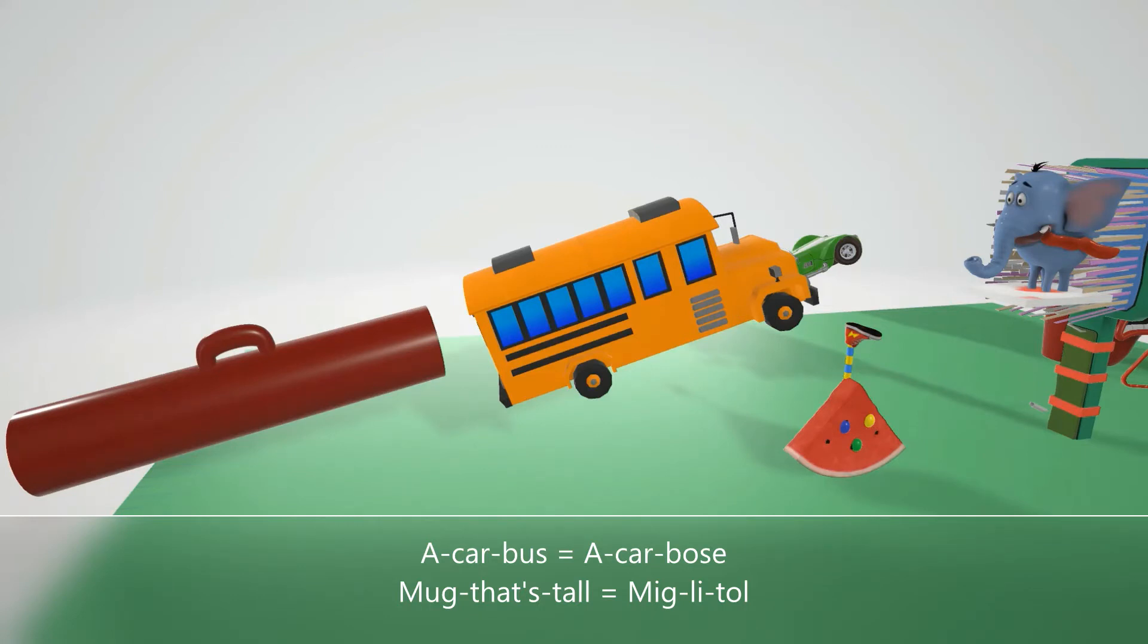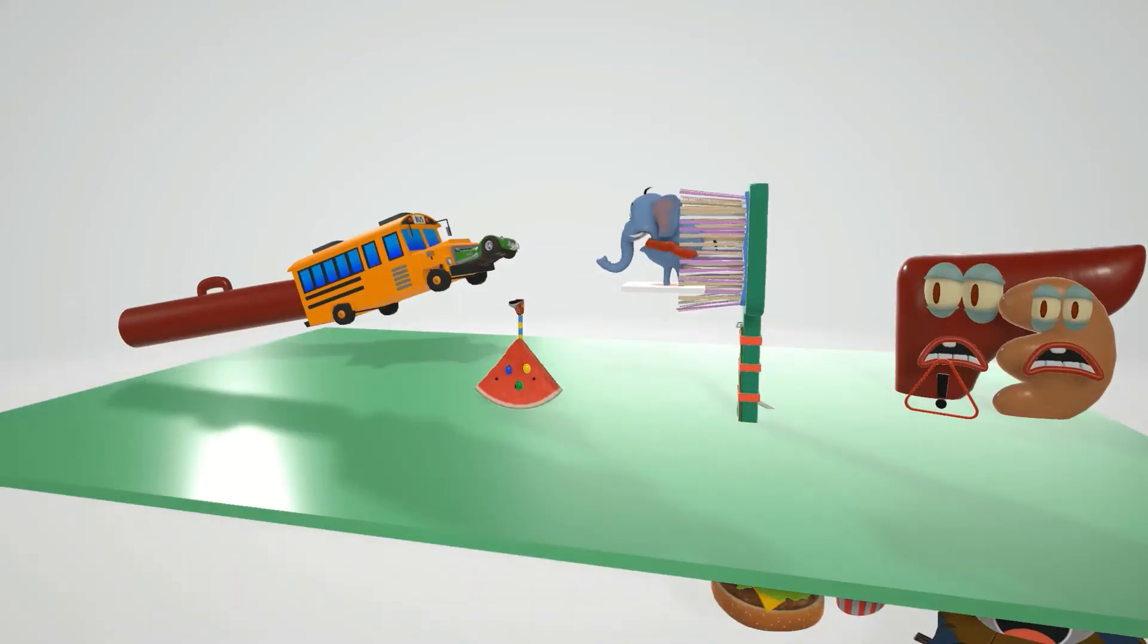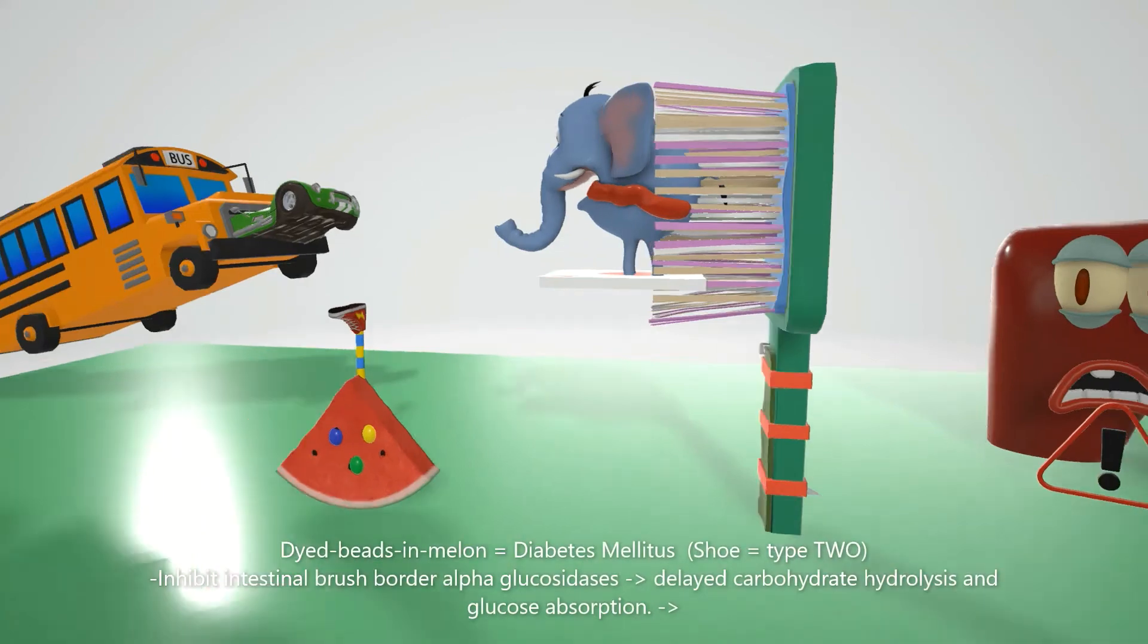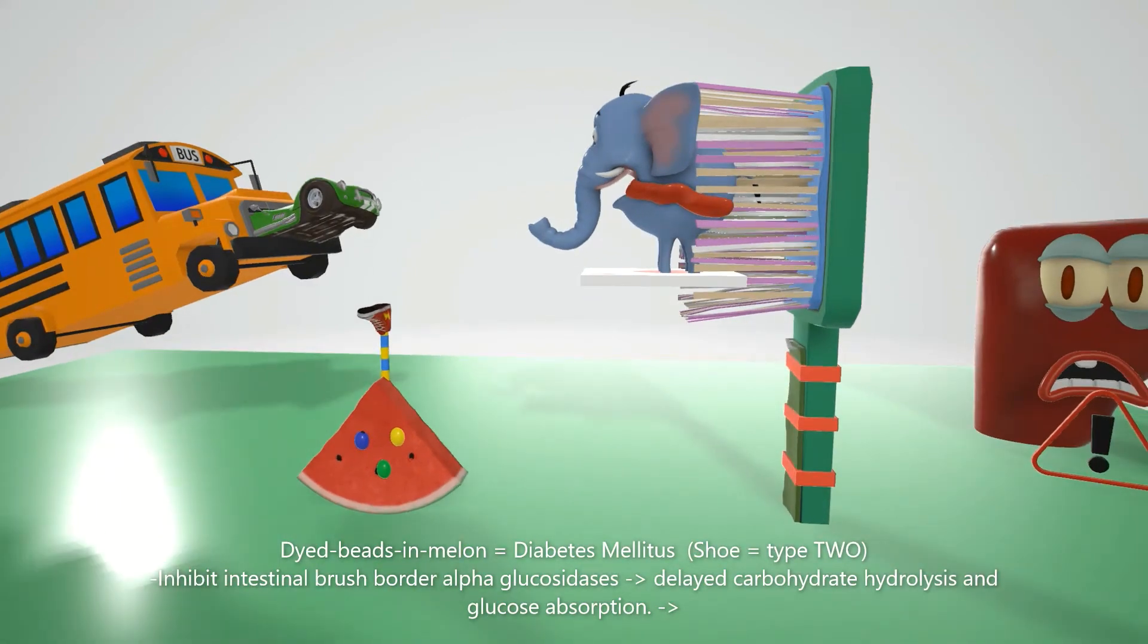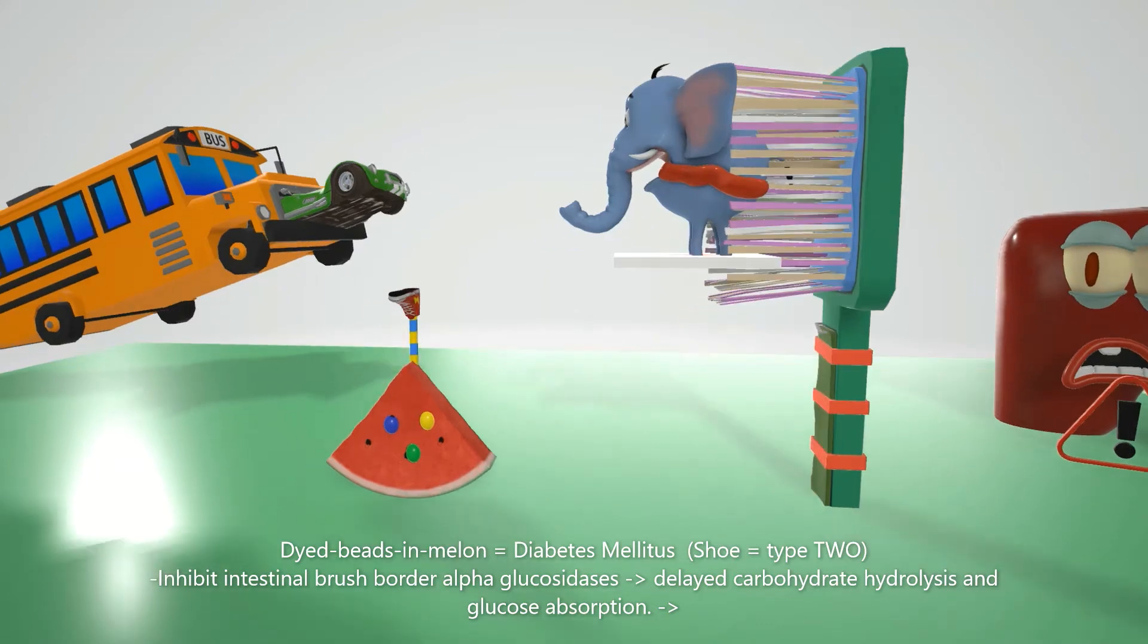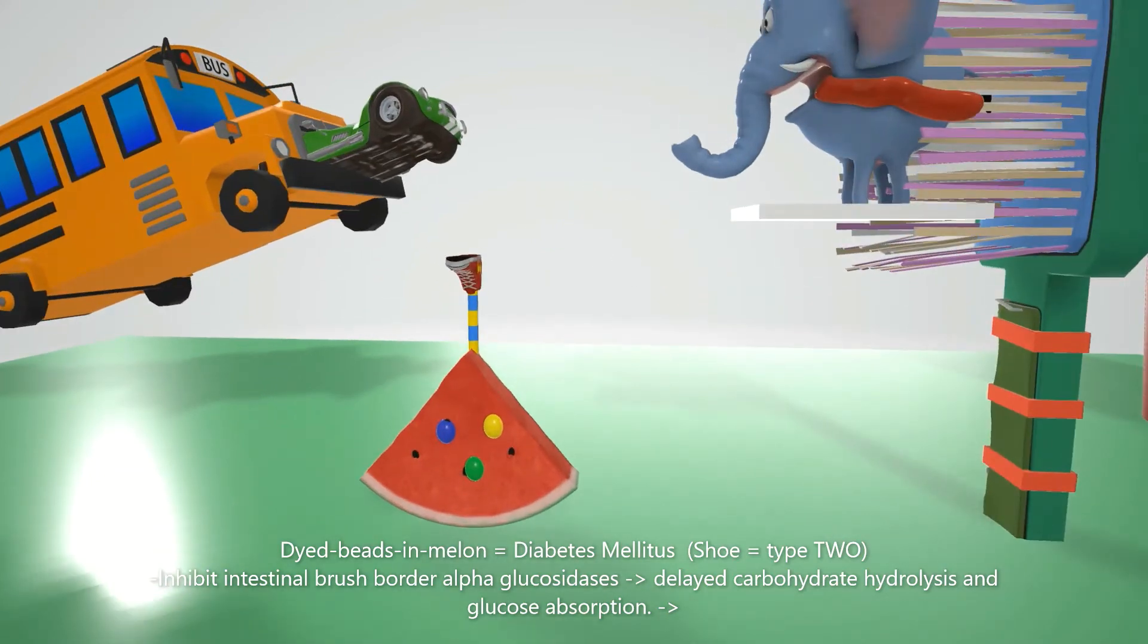So how do alpha glucosidase inhibitors work? Well, first we see that they're flying over this dyed melon over here with the dyed beads in it. Dyed beads in the melon for diabetes mellitus. And there's a shoe sticking out over here for two. Shoe for two, diabetes mellitus type 2.